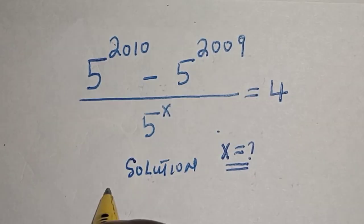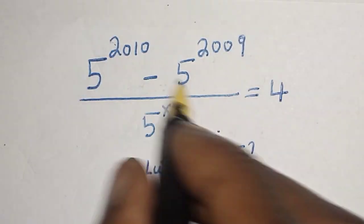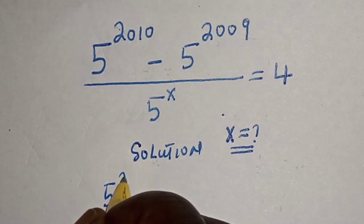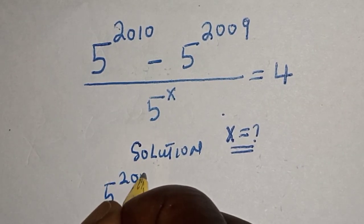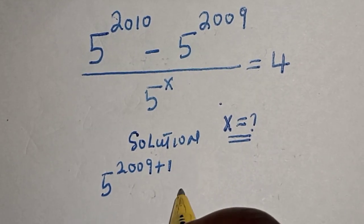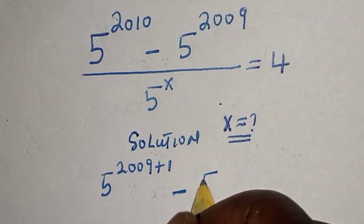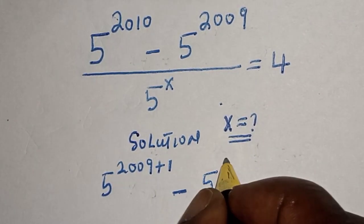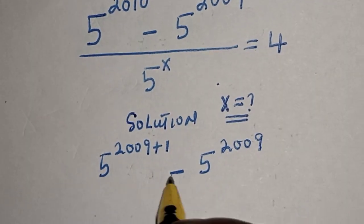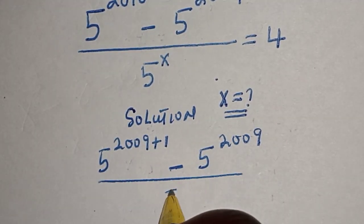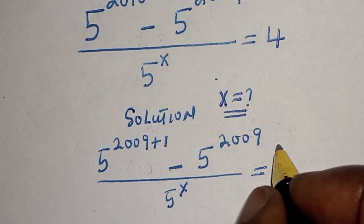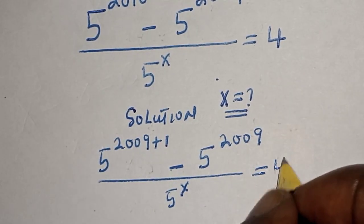5 raised to power 2010 can be written as 5 raised to power 2009 plus 1, then minus 5 raised to power 2009, then divided by 5 raised to power s, is equal to 4.